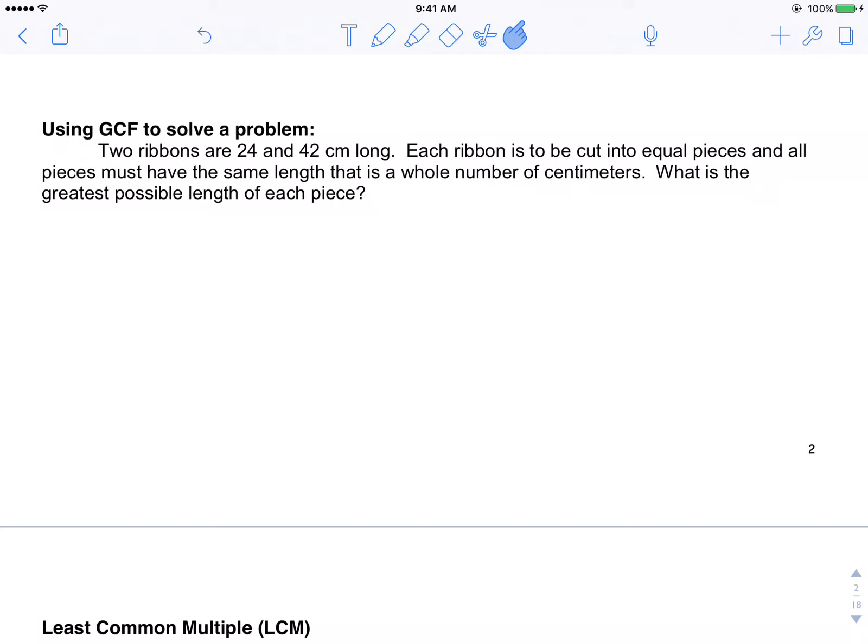Now, we can use this idea in word problems as well. So here's our problem. Two ribbons are 24 and 42 centimeters long. Each ribbon is to be cut into equal pieces, and all the pieces must have the same length, that is, a whole number of centimeters. What is the greatest possible length of each piece?